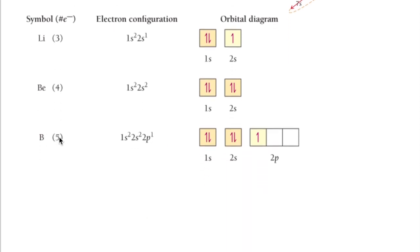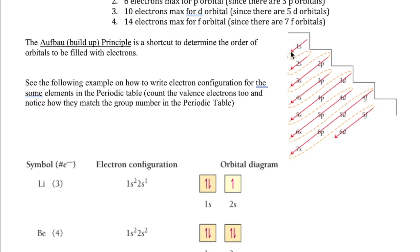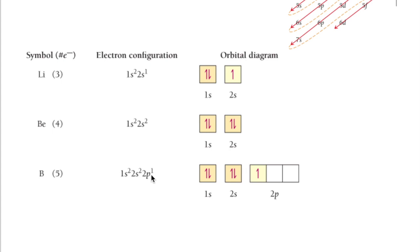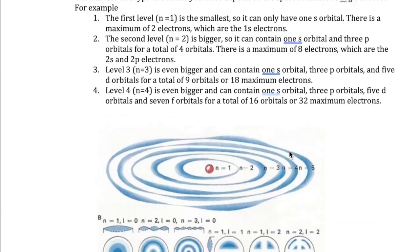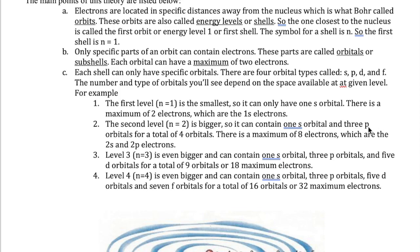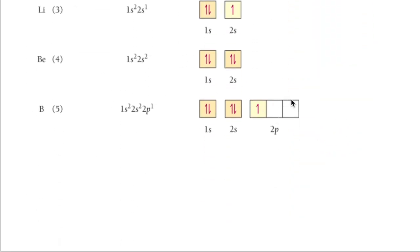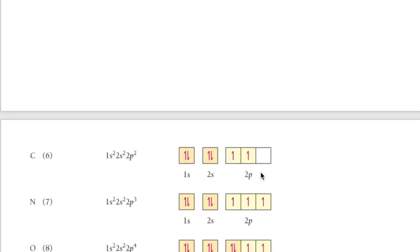For boron, with five electrons: 1s gets two, 2s gets two — that's four electrons used — and the fifth goes into 2p. So the configuration is 1s² 2s² 2p¹. In the orbital diagram, the 2p subshell is drawn as three squares because P orbitals always come in sets of three. All three have the same energy at the same level, so we place the first electron in one of the three squares.